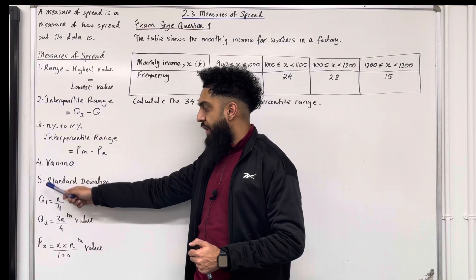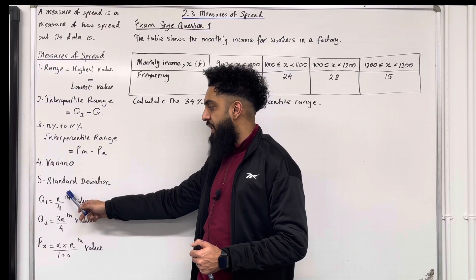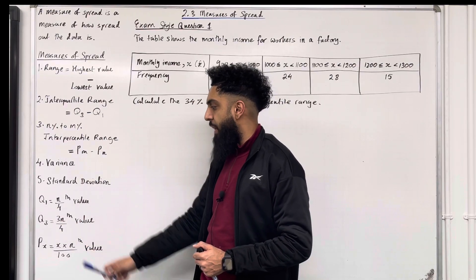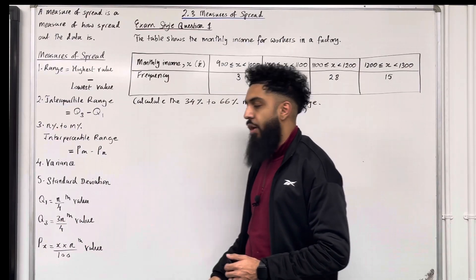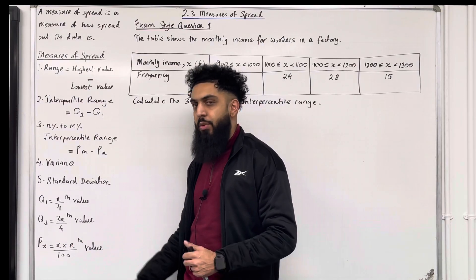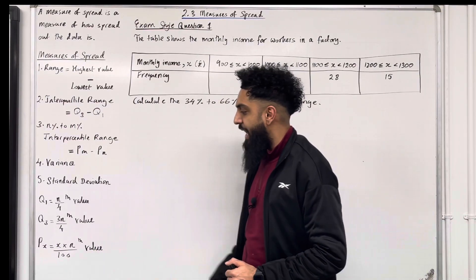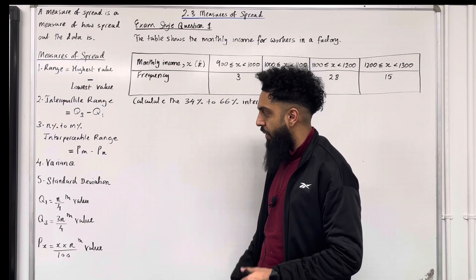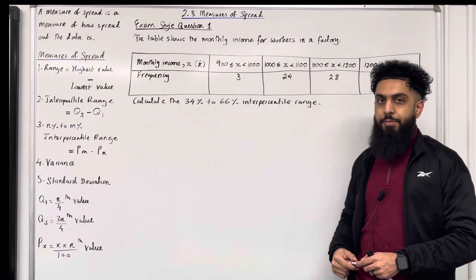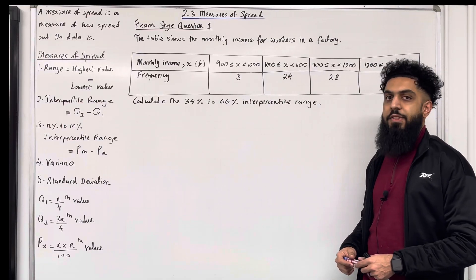To work out the lower quartile Q1, this is given by the n over 4th value. To work out the upper quartile Q3, this is given by the 3n over 4th value. And the x percentile Px is given by x times n over 100th value. These are the key facts of section 2.3 measures of spread, and I'm going to be implementing these to exam style questions.